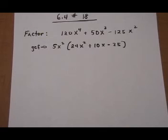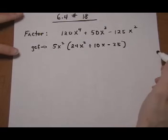6.4, number 18. Here we have a pretty large trinomial, or large coefficients anyways, and we want to factor it.